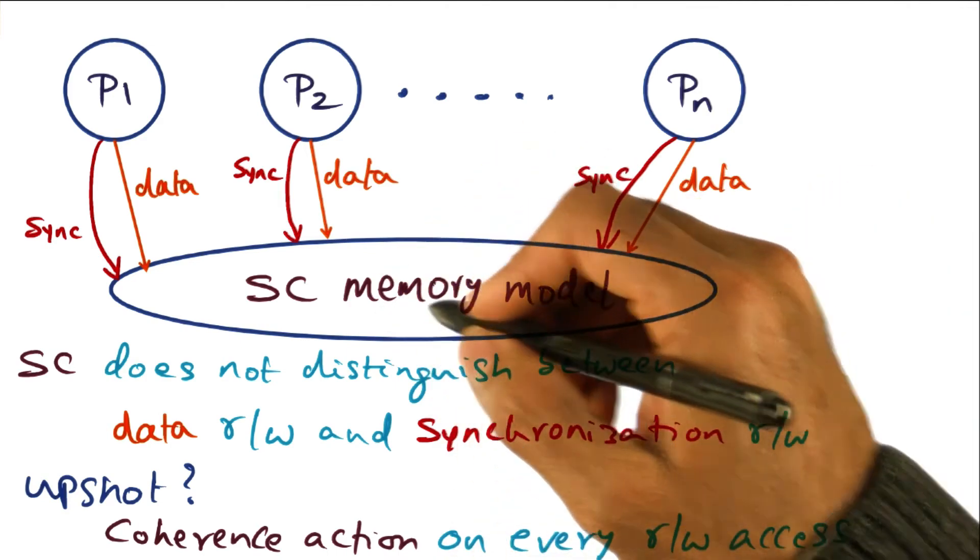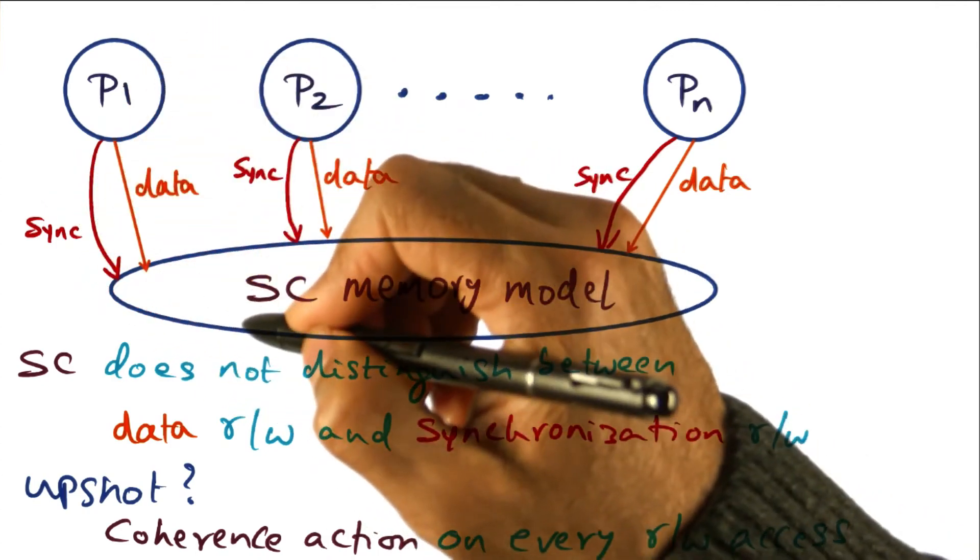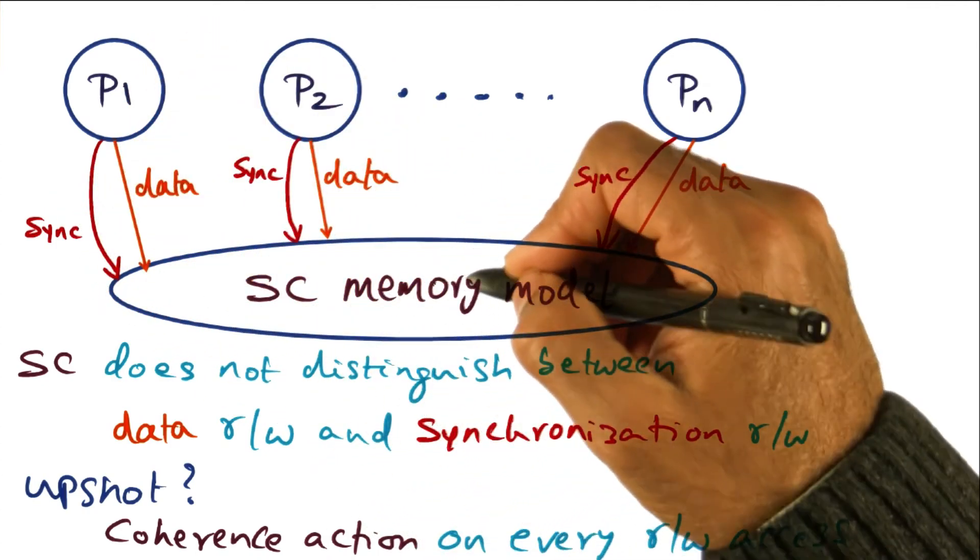That's the upshot of not distinguishing between normal data accesses and synchronization accesses that is inherent in the SC memory model.